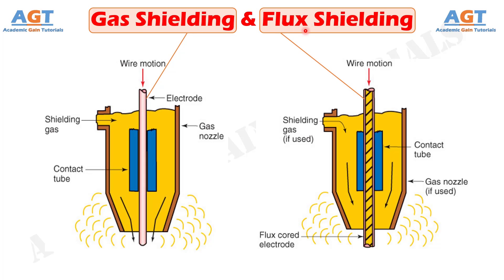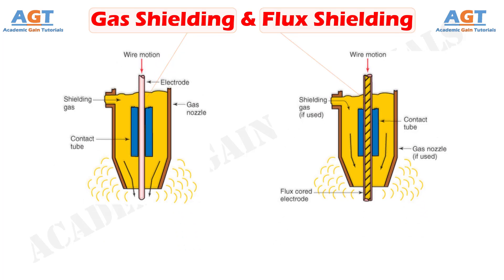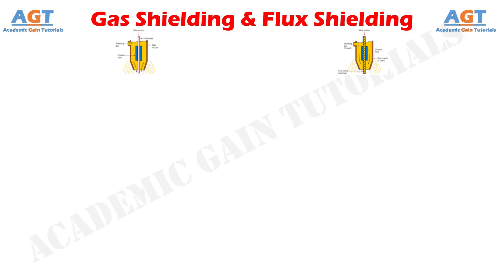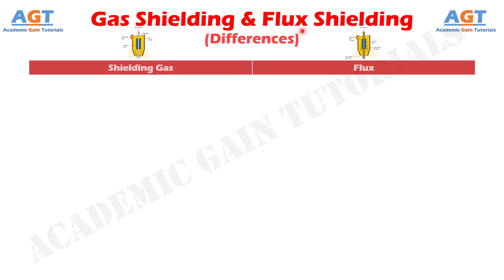While few arc welding processes utilize shielding gas, many other arc welding processes utilize flux. So, let's look into the basic differences between gas shielding and flux shielding for arc welding in a tabular form.